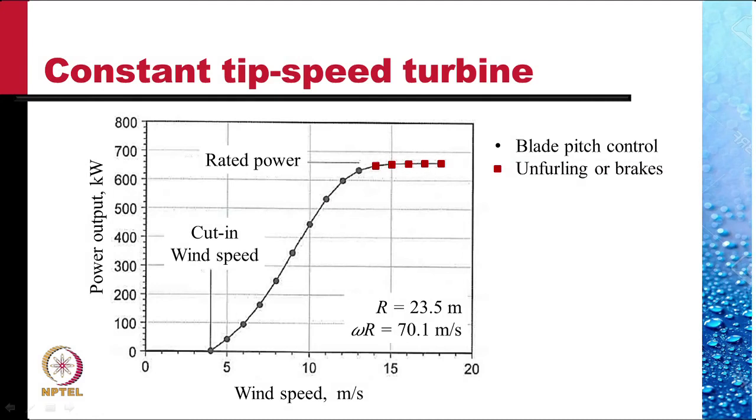This is the typical power output curve against wind speed. There is a cut in wind speed. We arrange the electronics such that the brakes are applied till the wind reaches a minimal level.